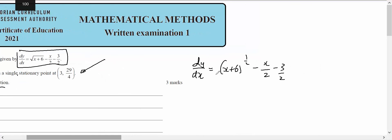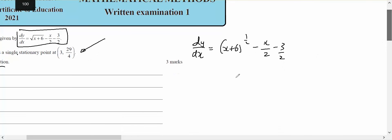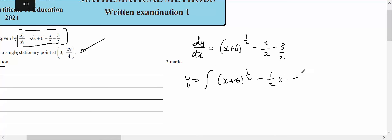Okay, so dy/dx equals x plus six to the square root, minus x on two, minus three on two. Therefore y will be the integral of x plus six to the half, minus a half x, minus three on two, dx.